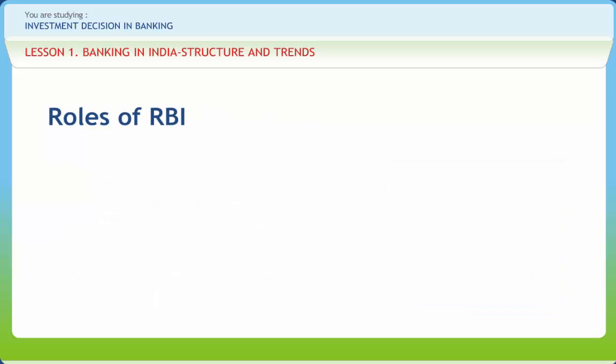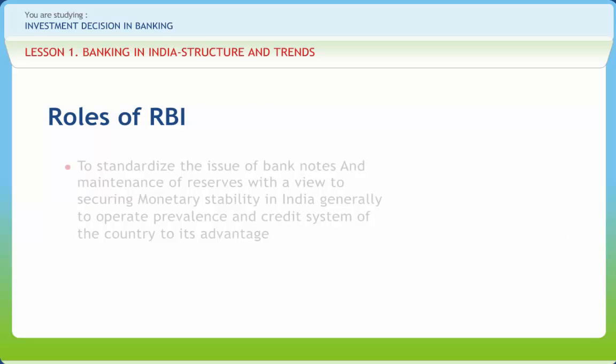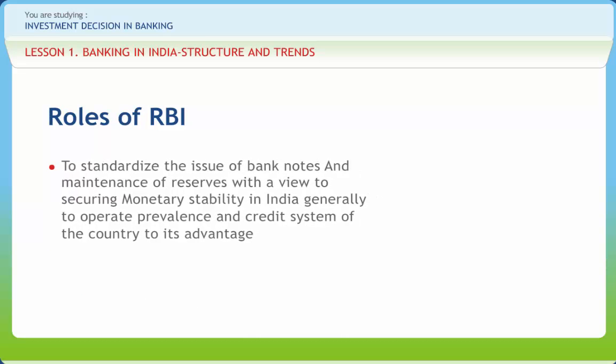The role of RBI is to standardize the issue of banknotes and maintenance of reserves with a view to securing monetary stability in India, and generally to operate the credit system of the country to its advantage. The bank has the sole right to issue banknotes of all denominations under Section 22 of the Reserve Bank of India Act.